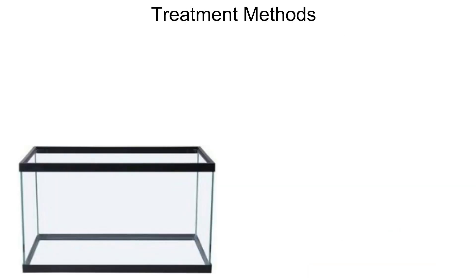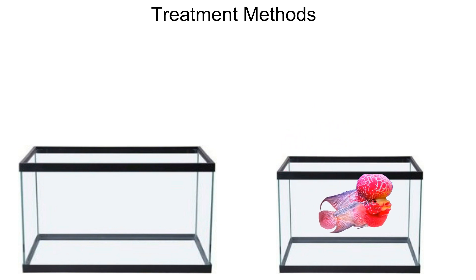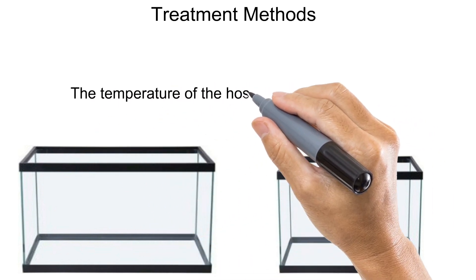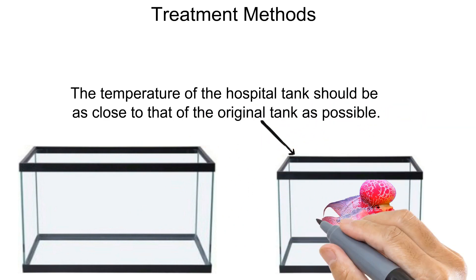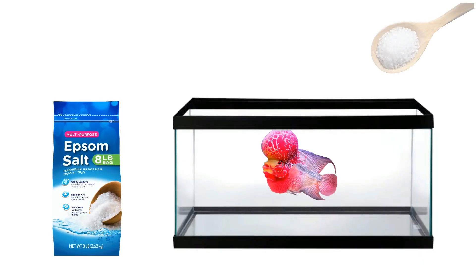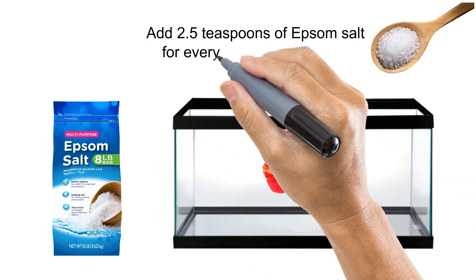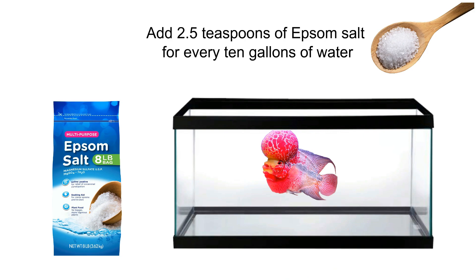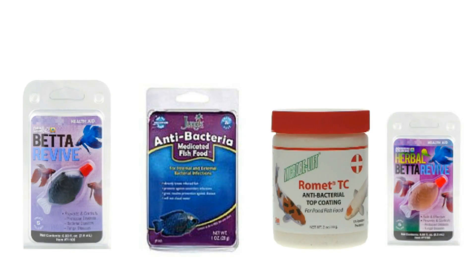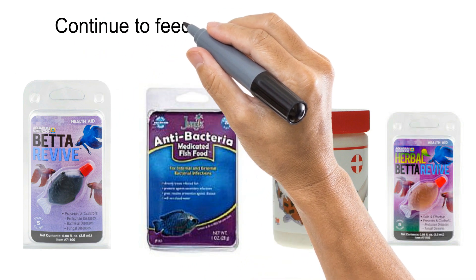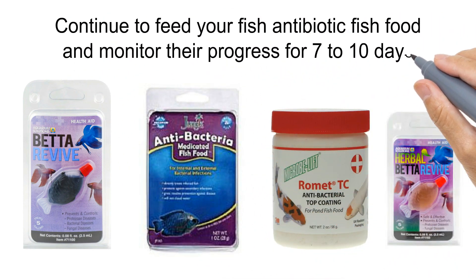Isolate the sick fish in a hospital tank to make water changes easier. The temperature of the hospital tank should be as close to that of the original tank as possible. Create a salt bath by adding no more than 2.5 teaspoons of Epsom salt for every 10 gallons of water. Feed your fish antibacterial fish food and monitor their progress for 7 to 10 days.